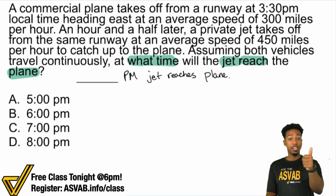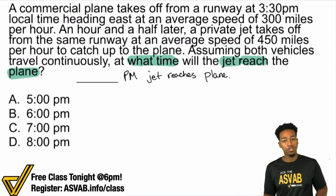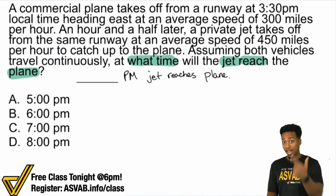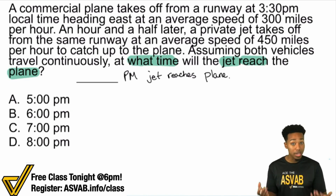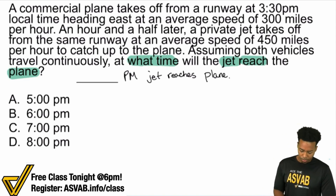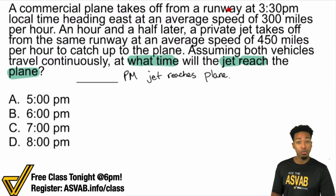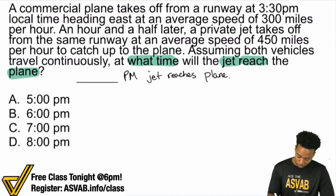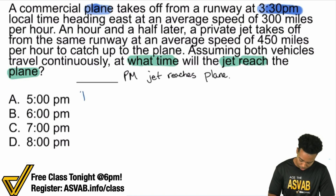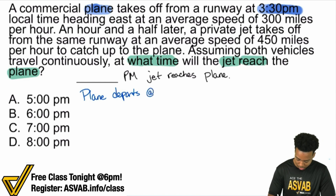First step was writing what we wanted — there's the question right there: the time that the jet reaches the plane. Number two, we're now going to go through the information and see what we have. A commercial plane takes off from a runway at 3:30 PM — that's pretty important information. So the plane departs at 3:30 PM.